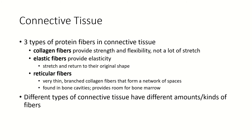There are three types of protein fibers we see in connective tissue — these are the extracellular proteins outside of the cells. First, collagen is really strong and a little bit flexible; it can bend but doesn't stretch particularly much. Elastic fibers provide elasticity. What's important is not just that elastic fibers stretch, but that they return to their original shape after they stretch — they stretch, go back to their original shape, and then can stretch again.